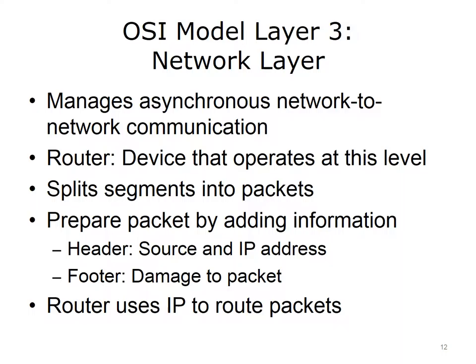Next is OSI model layer 3, known as the network layer. This layer manages asynchronous network-to-network communication. Services split the segment into manageable sizes called packets and further encode each packet with information used by layer 3 devices. A router is an example of a device that operates at layer 3. Services prepare the packet for traffic by adding electronic pieces of information, including a header and footer. Information stored in the header includes the source and destination IP address; the footer contains the result of a mathematical calculation that helps devices determine damage to the packet. The Internet Protocol, or IP, operates at this layer. Routers use IP addressing to route packets to their final destination. TCP does not operate at this level — it becomes operable in layer 4, the transport layer. At the network layer, the communication is a packet.